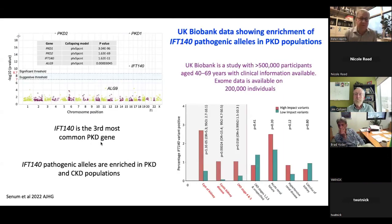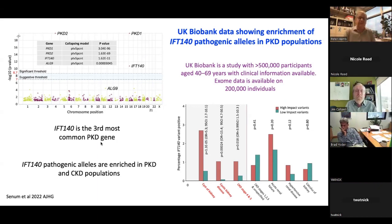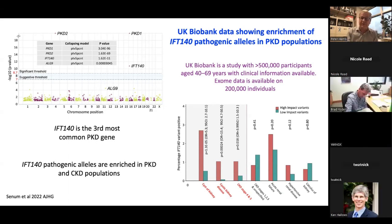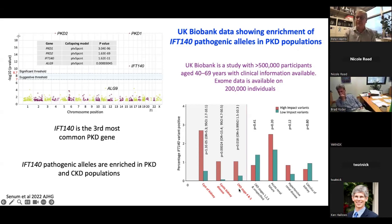We used large population databases to look at the likely significance of IFT140 as an ADPKD gene. Using the UK Biobank, we were able to show that it's likely the third most common cause of polycystic kidney disease, enriched in ICD-selected populations for ADPKD, for cysts of the kidneys, and for later-stage CKD, although it's not normally associated with CKD — but not for other codes less related to ADPKD.